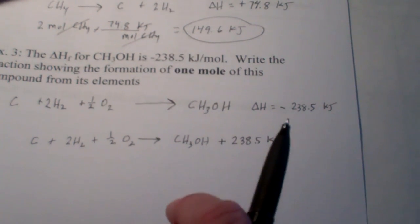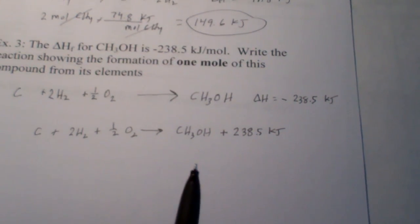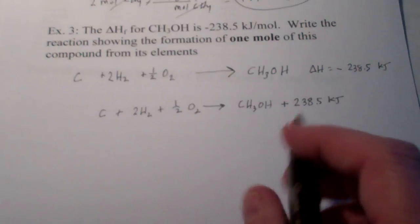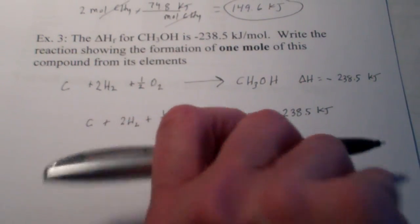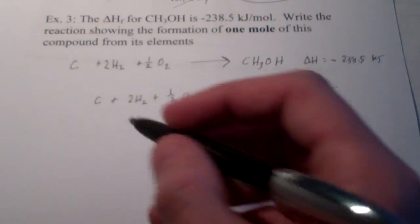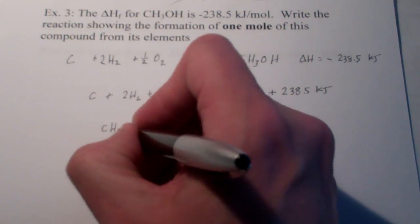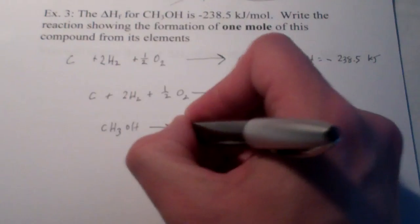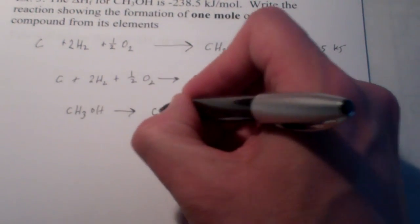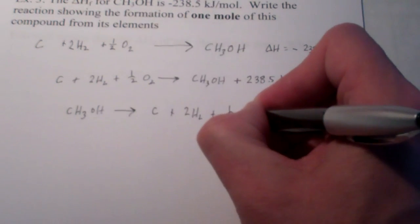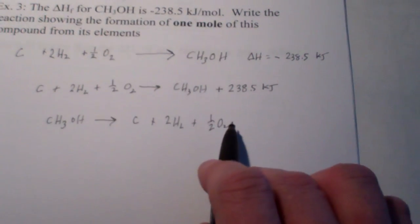Now, how would I write the heat required if it were an endothermic reaction? Well, let's write this one backwards. Okay? Because in the forward reaction, heat is released. What about the backwards reaction? What if I'm decomposing it? Well, I would have CH3OH being decomposed into its elements, C and 2H2 plus a half of an O2.